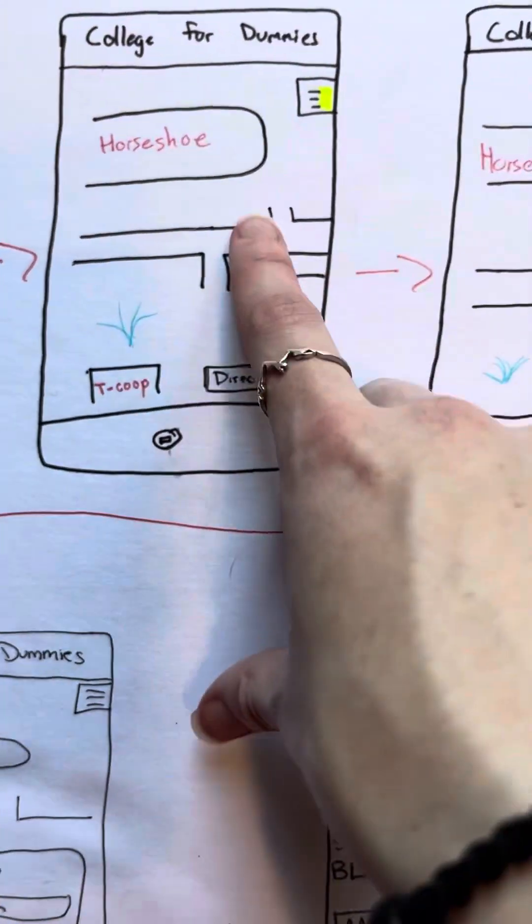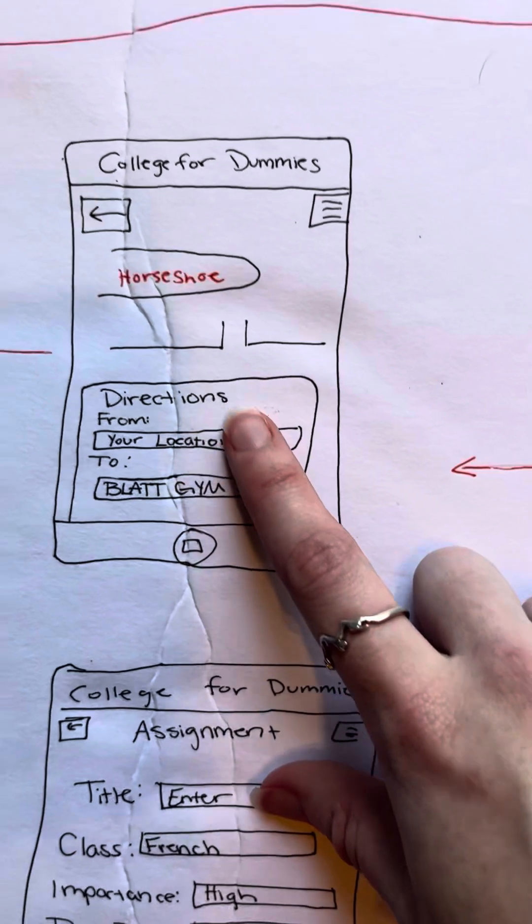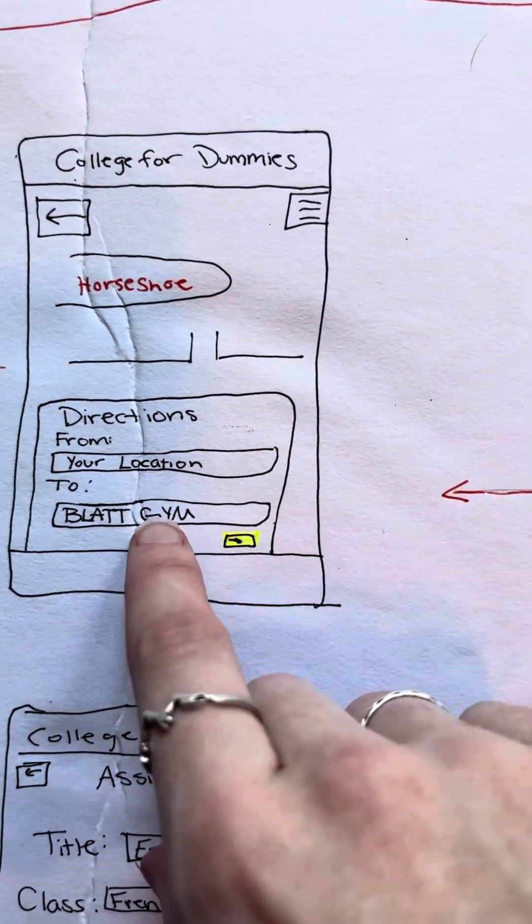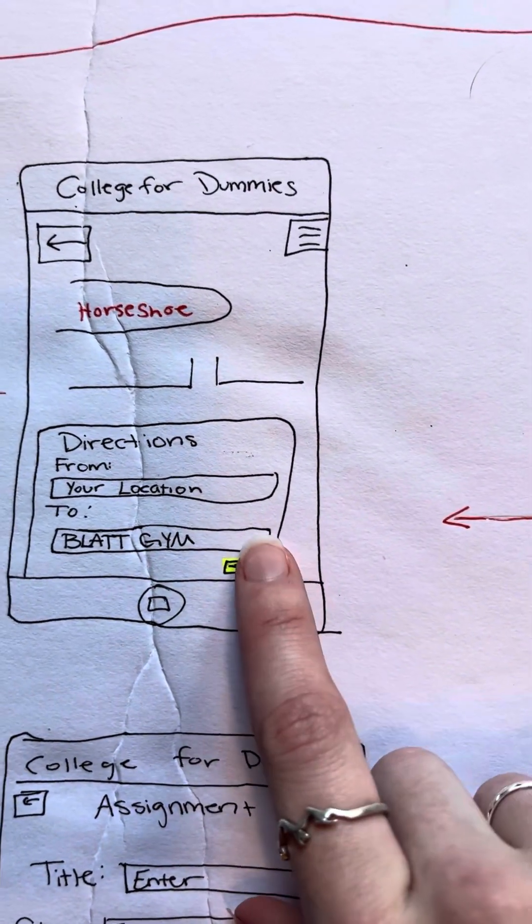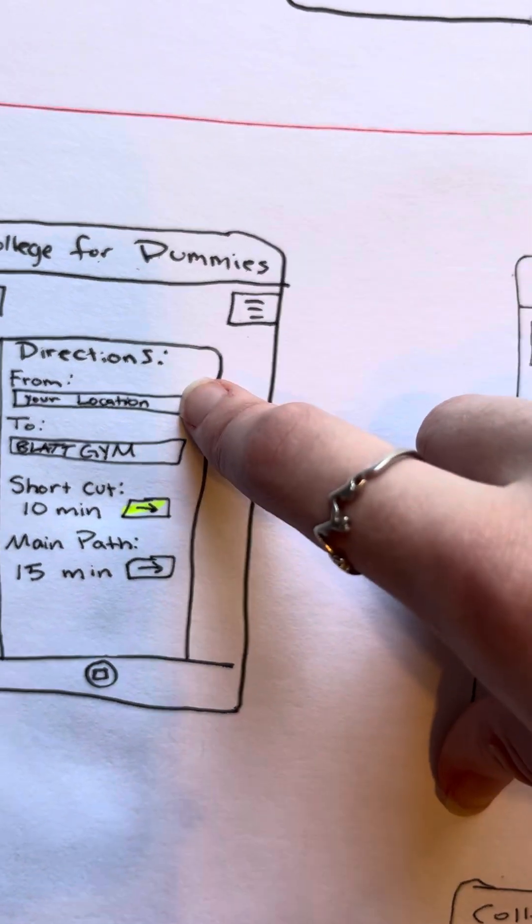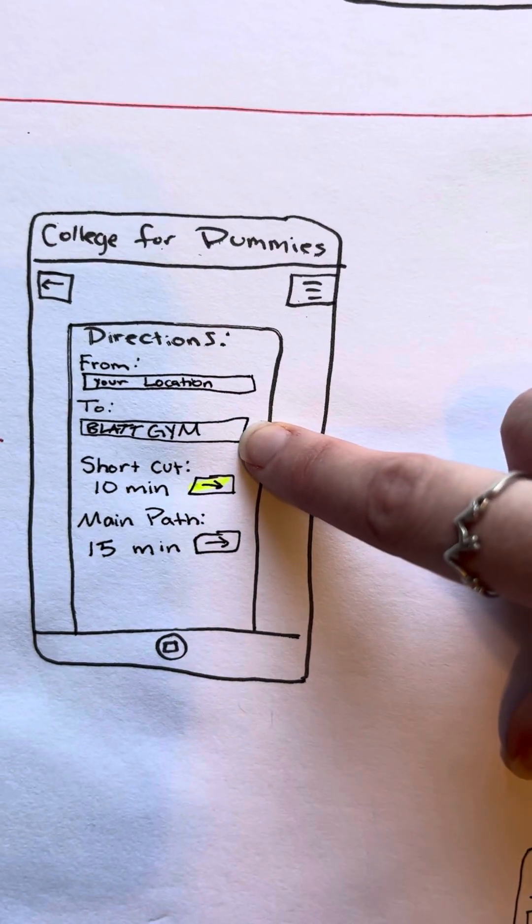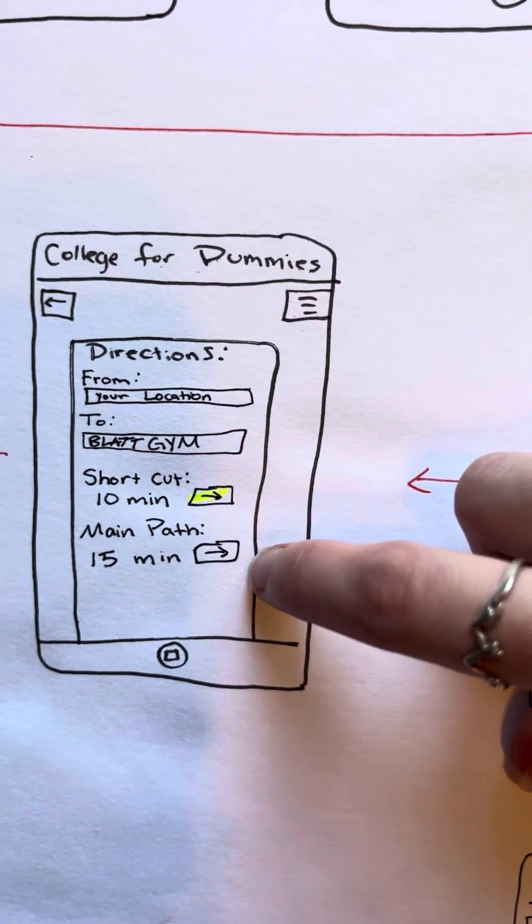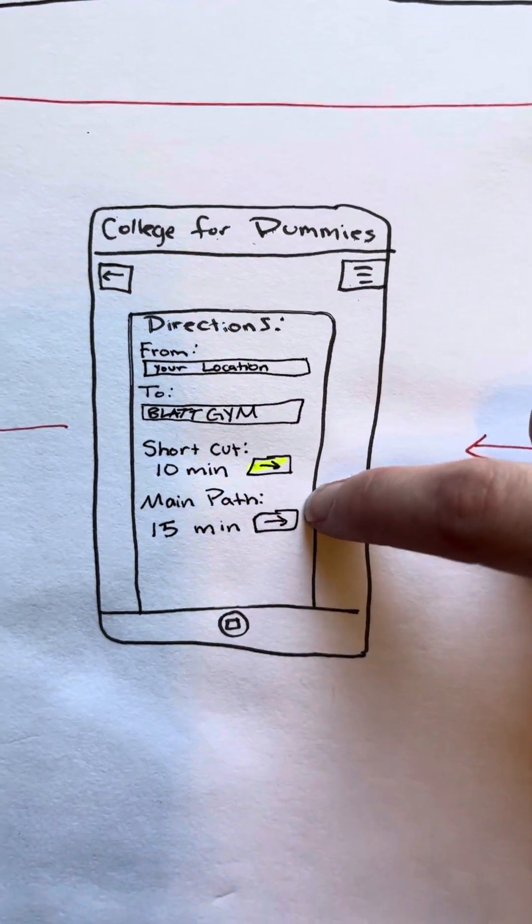So that's what we started off here with directions. Down here, map directions to Blatt Gym. You can go ahead and press go, and it'll pop up and show you from where you're going. You can change the location to where you're going, and if you want to use a shortcut or if you want to stay on more of the main roads, main paths, you can choose that.